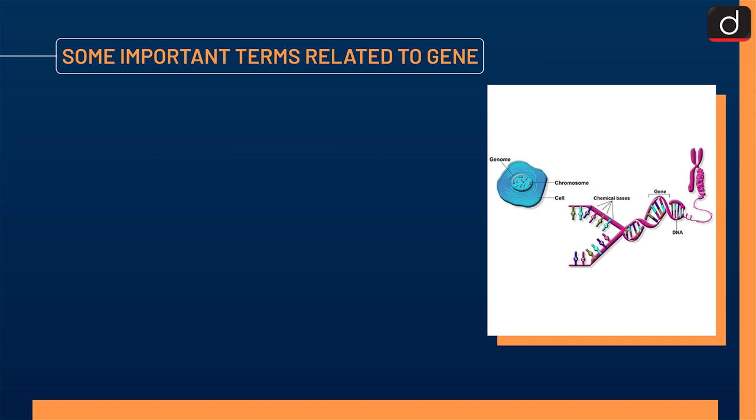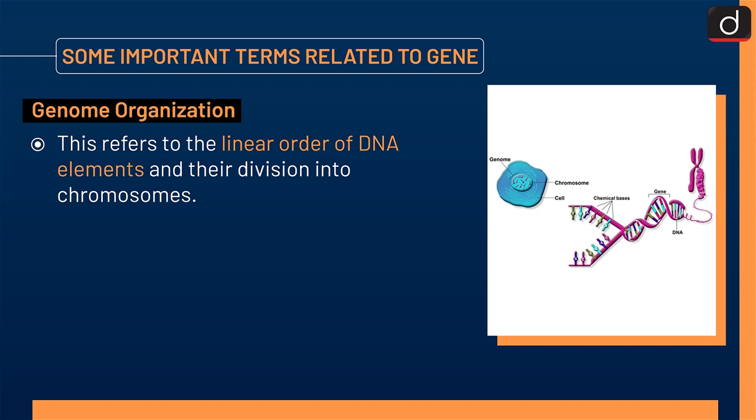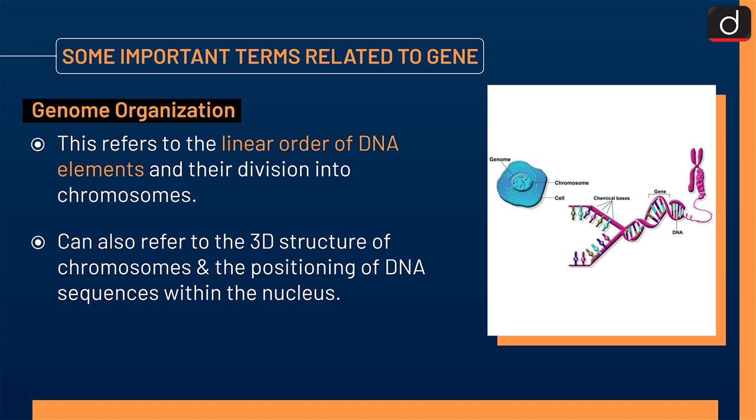Genome organization refers to the linear order of DNA elements and their division into chromosomes. It can also refer to the 3D structure of chromosomes and the positioning of DNA sequences within the nucleus.